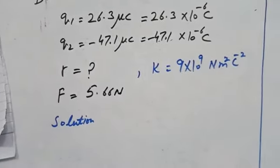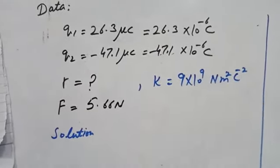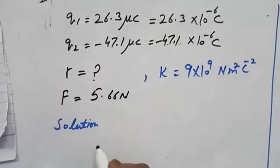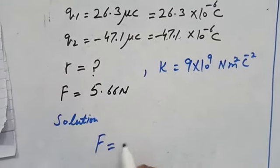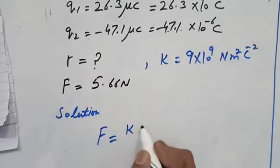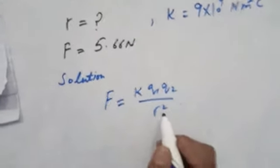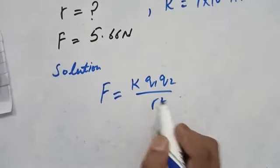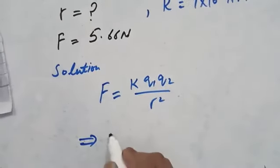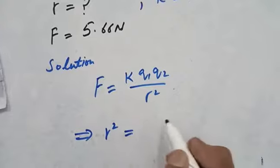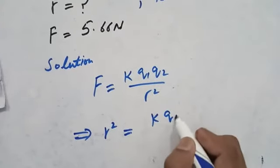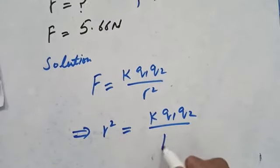To calculate force between two point charges, we use Coulomb's law: F = KQ1Q2/r². Since we want to calculate distance r, we rearrange this as r² = KQ1Q2/F.